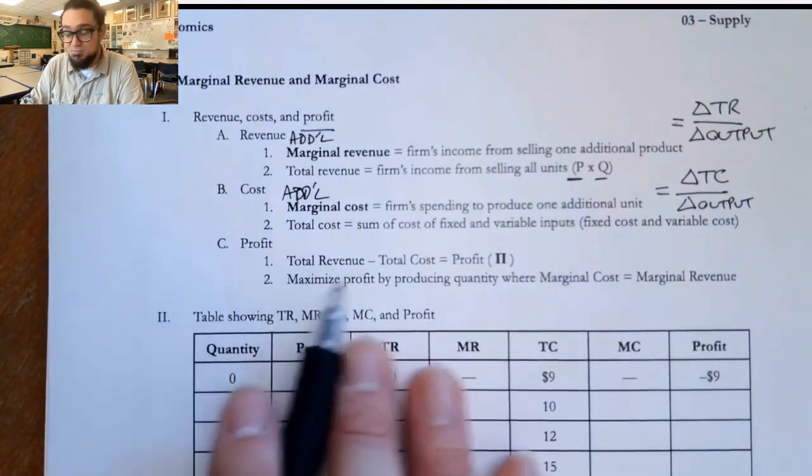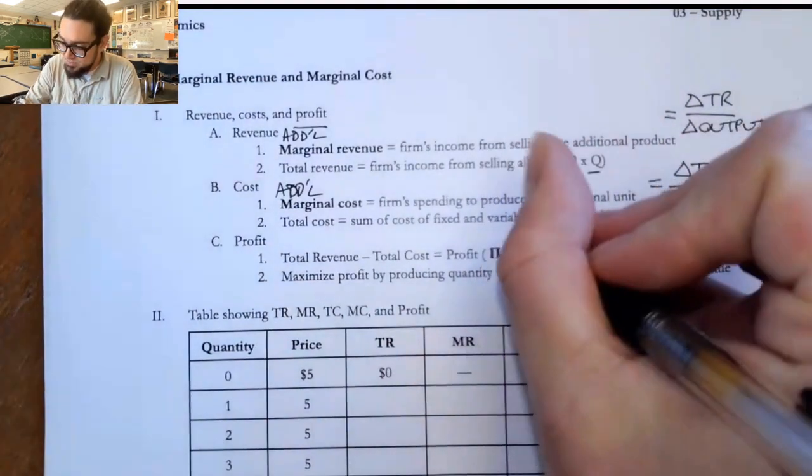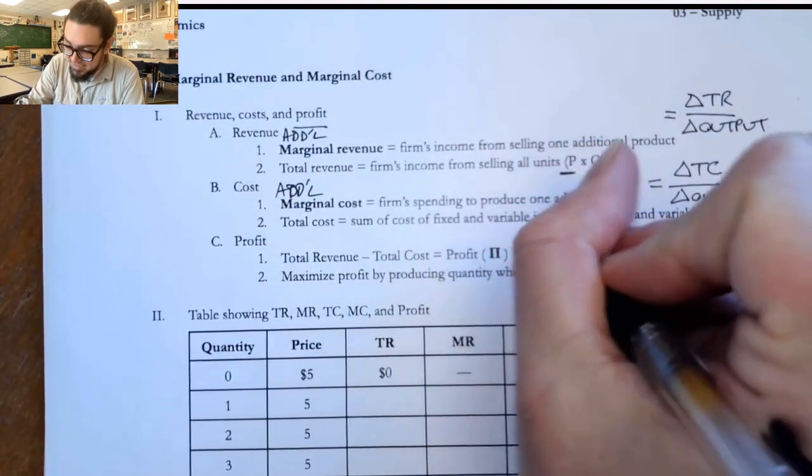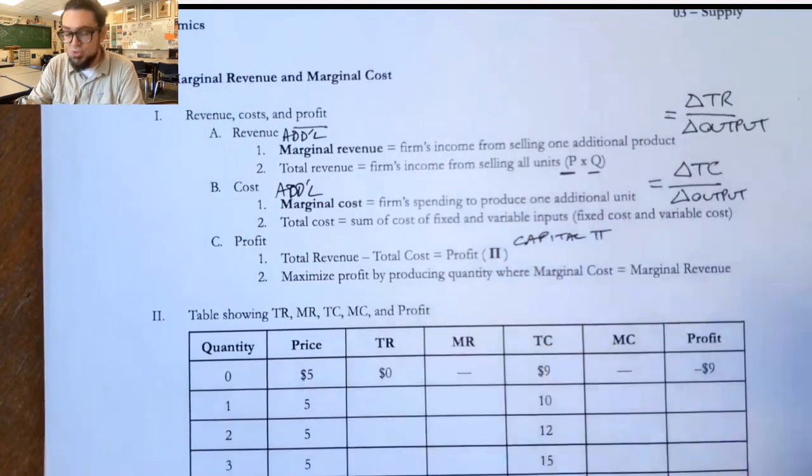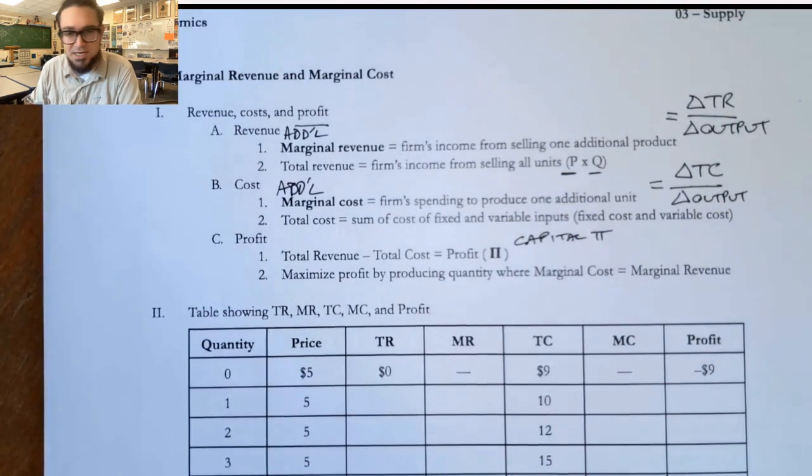Now, profit is just pretty straightforward as well. Total revenue minus total cost is profit. This symbol is a capital pi. And that's a kind of traditional symbol for profit in this class. Why? Well, because we don't use P for profit, we already used it for price.